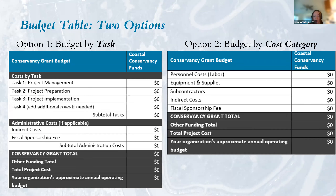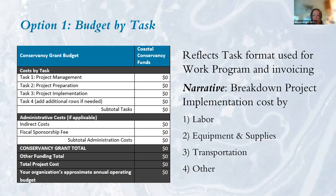Two budget submission formats are offered: by task and by cost category. The task format uses three tasks — project management, project preparation, and project implementation — and reflects the format used for invoicing once a grant is approved. In the narrative, break down implementation costs by labor, equipment, supplies, transportation, and other. The cost category format is more intuitive, allocating costs by type of expense such as personnel, equipment, and subcontractors. You'll eventually need to use the task format, and staff can provide technical assistance.